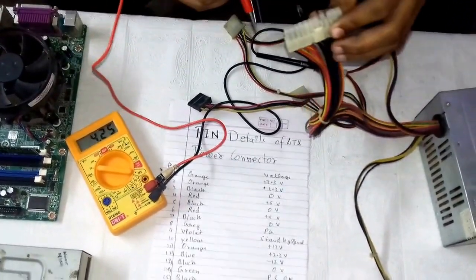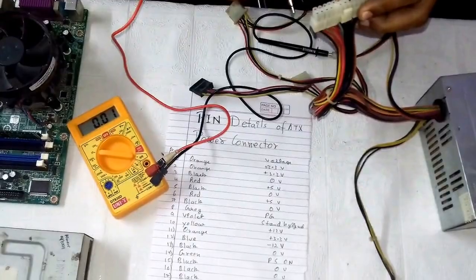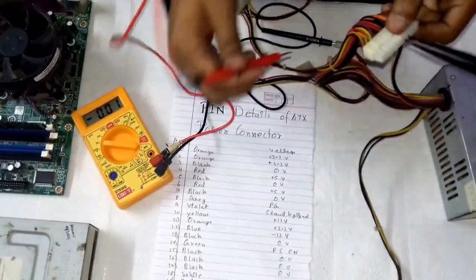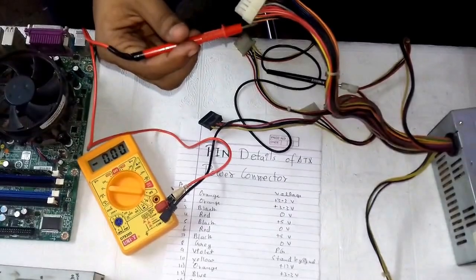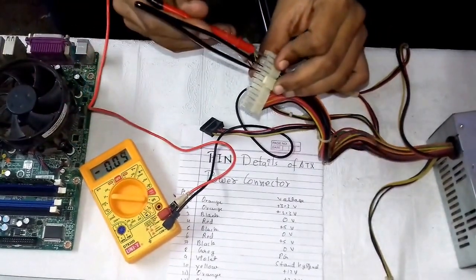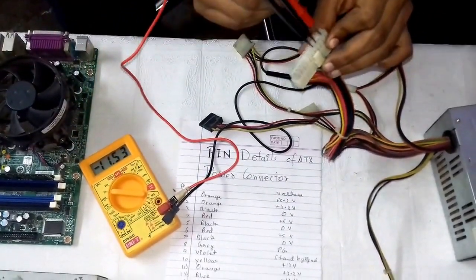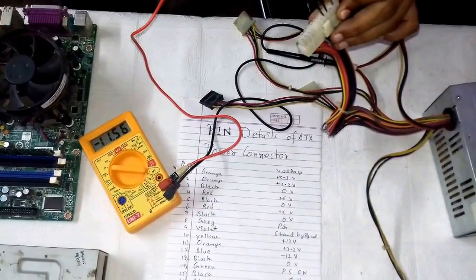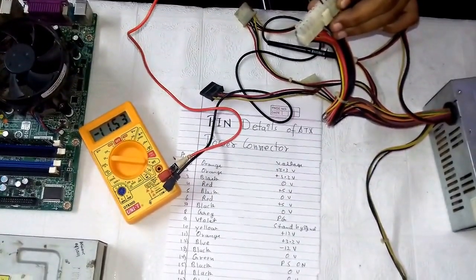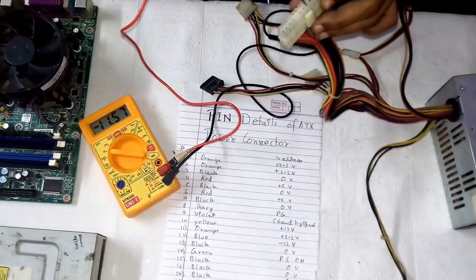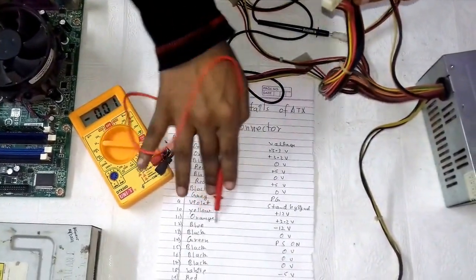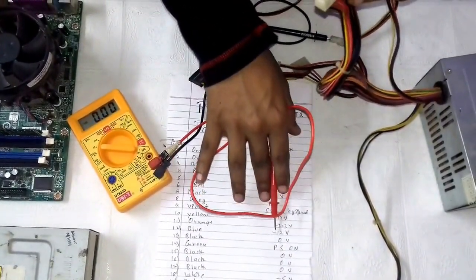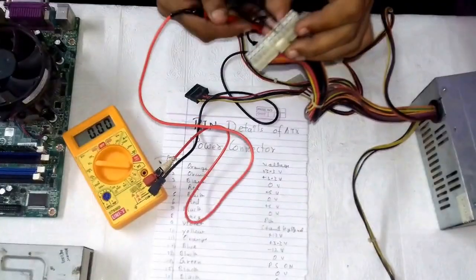Now let us check the voltage in blue wire. Blue wire is here. It is showing minus approximately 12 volts. Yeah, blue is minus 12 volts. So we have verified all the voltages.